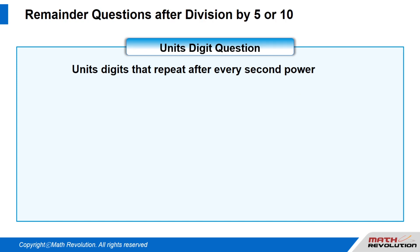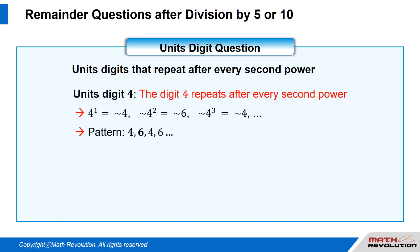We will look at the digits that repeat after every second power. Units digit 4: the digit 4 repeats after every second power. That is, 4 to the power of 1 equals 4, 4 to the power of 2 equals 6, and 4 to the power of 3 equals 4, and so on. Thus, the pattern is 4, 6, 4, 6, and so on.